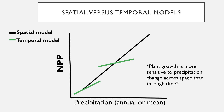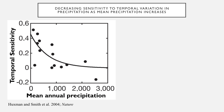However, these relationships are fundamentally produced by the same data. Ecologists have built temporal models across gradients of mean annual precipitation, and what we generally see is that as mean annual precipitation increases, the slope of the temporal model decreases. This is shown in a graph from a Nature paper by Travis Huxman, Melinda Smith, and colleagues, where temporal sensitivity on the y-axis is related to mean annual precipitation across multiple sites. Temporal sensitivity decreases as mean annual precipitation increases — drier regions are expected to be far more sensitive to temporal variability in precipitation than wet regions.